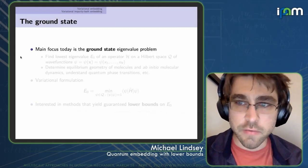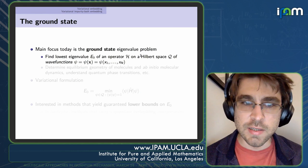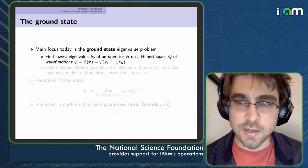The focus of this talk is the ground state eigenvalue problem, where we want to find the lowest eigenvalue of an operator on a Hilbert space, which you can think of as a function space consisting of functions of many variables — enough so that the curse of dimensionality sets in and we can't store this function explicitly.